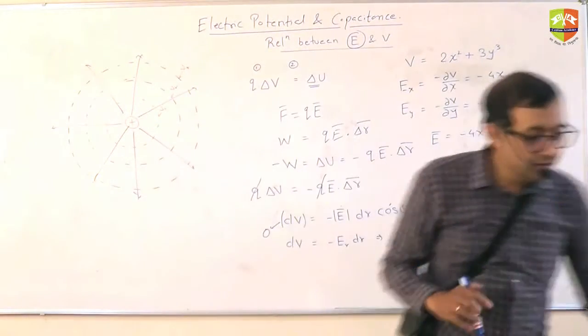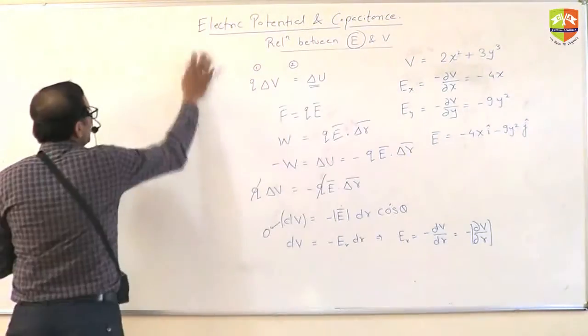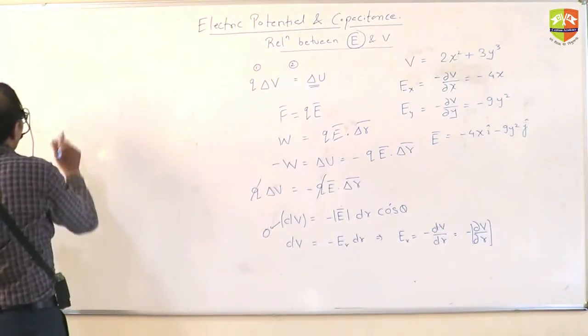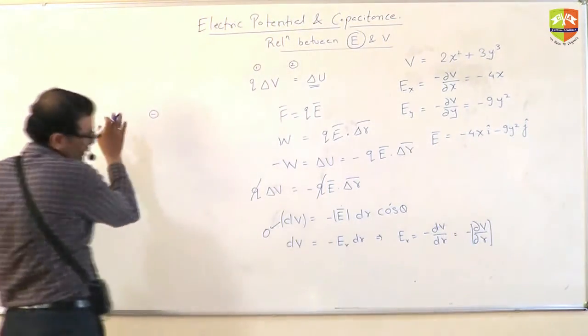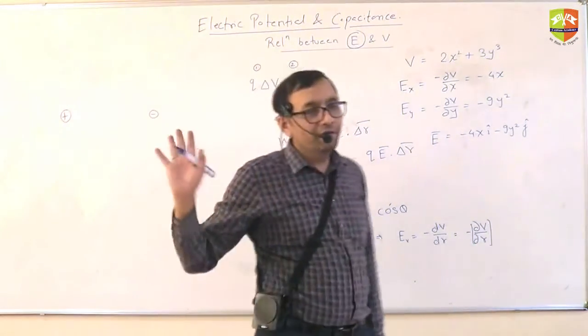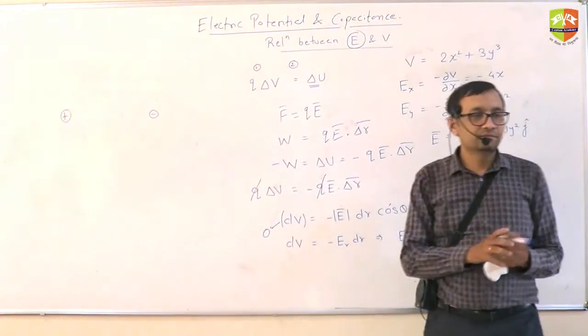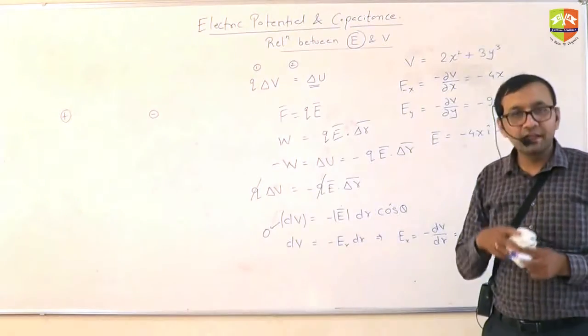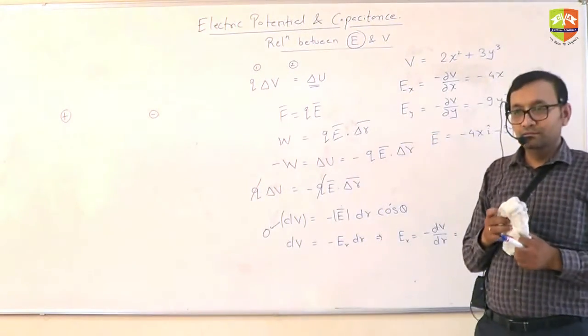Now can you draw the equipotential surface for a dipole? Two equal and opposite charges placed in front of each other like this. First you draw the field lines and then draw the equipotential surface. First draw the electric field lines and then perpendicular to that you try to draw the surface.